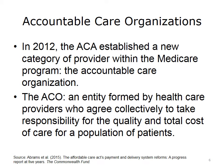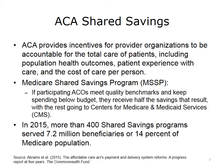ACOs began in 2012 when the Affordable Care Act established a new category of provider within the Medicare program called the Accountable Care Organization. The ACO is essentially an entity formed by health care providers who agree collectively to take responsibility for the quality and total cost of care for a population of patients. The ACA provides incentives for providers to be accountable for the total care of patients, including population health outcomes, patient experience with care, and the cost of total care. This is sometimes referred to as the triple aim: improving outcomes in population health, patient experience of care, and cost of care.